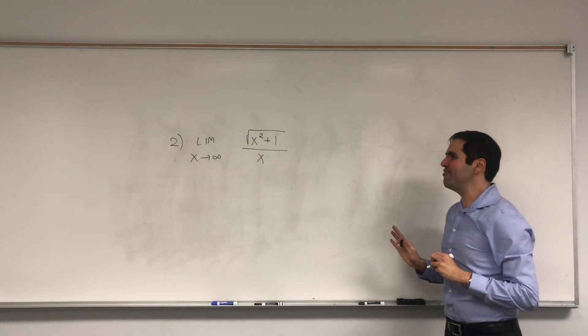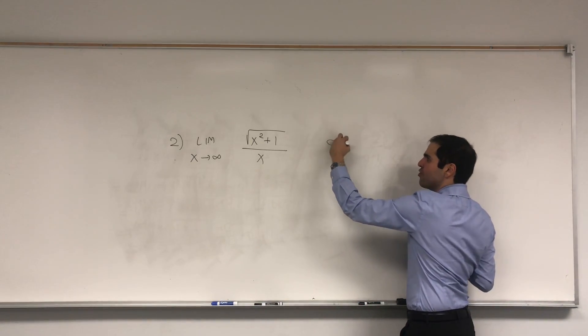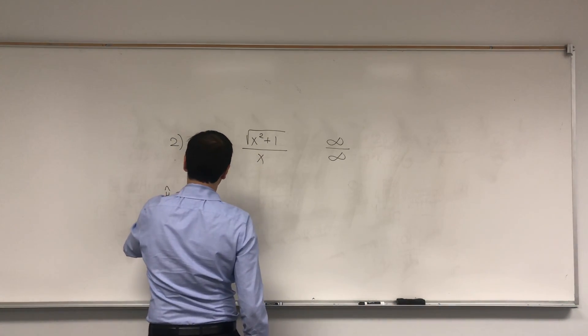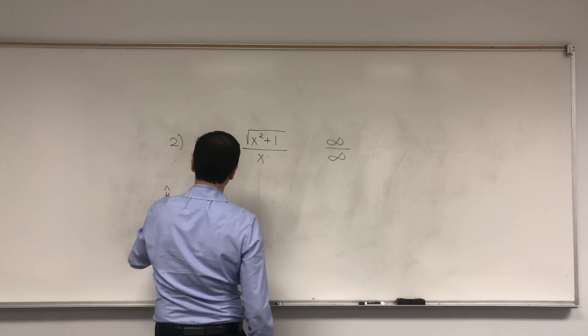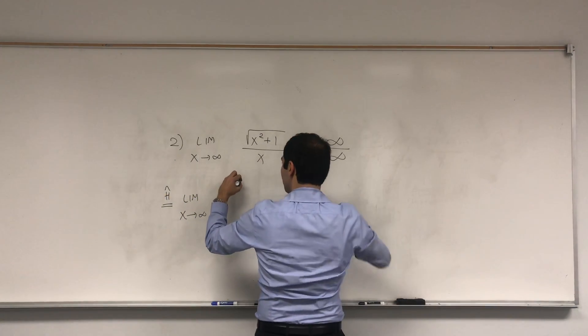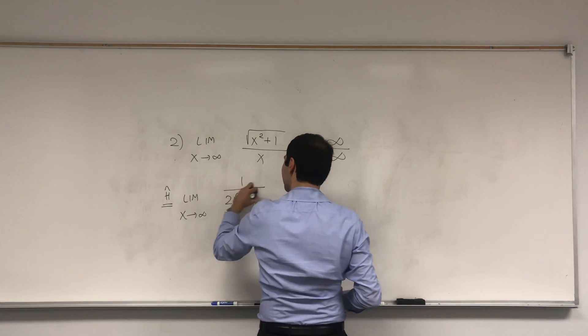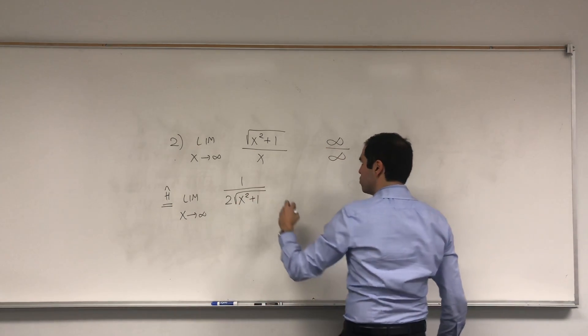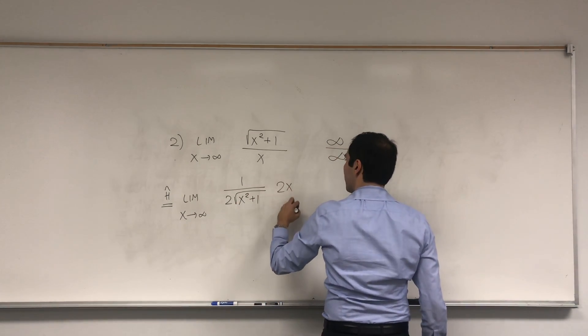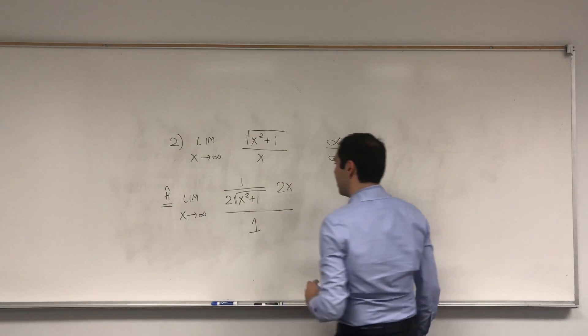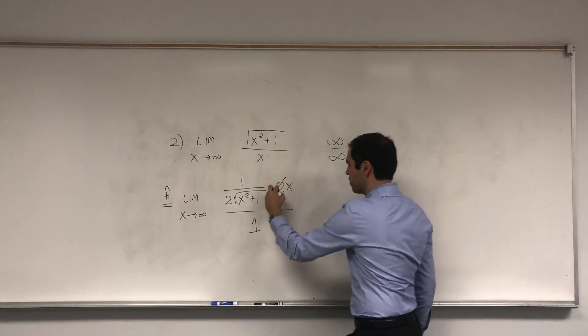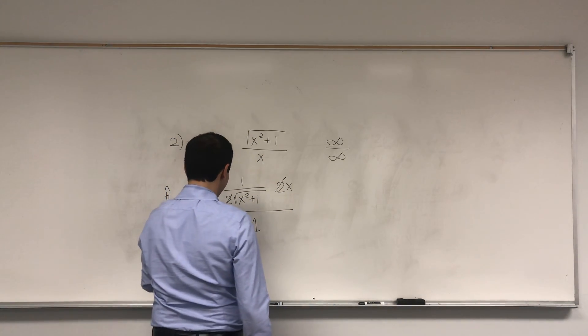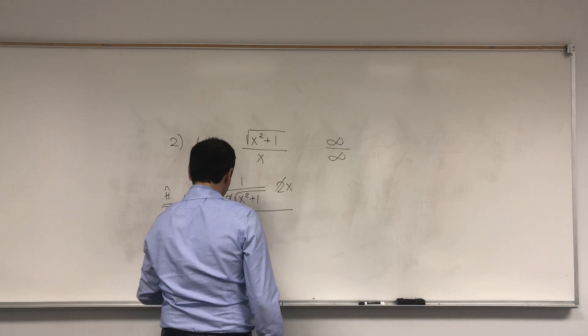How about the limit as x goes to infinity of square root of x squared plus 1 over x? You'll see, it's one of my favorite problems. So, this is of the form infinity over infinity, which means we can apply L'Hopital's rule, and this becomes the limit as x goes to infinity of the derivative of the numerator. So, just use the chain rule to figure this out. Derivative of square root, which is 1 over 2 square root. Derivative of x squared, which is 2x. x divided by the derivative of x, which is 1. This cancels out, and you get the limit as x goes to infinity of x over square root of x squared plus 1.